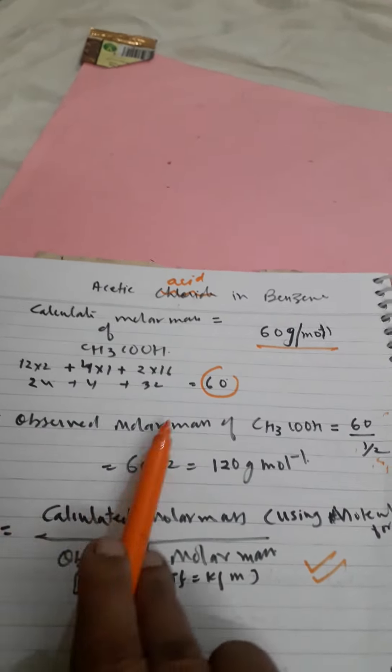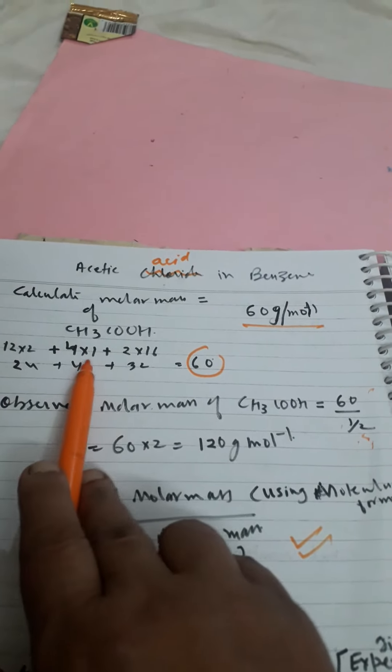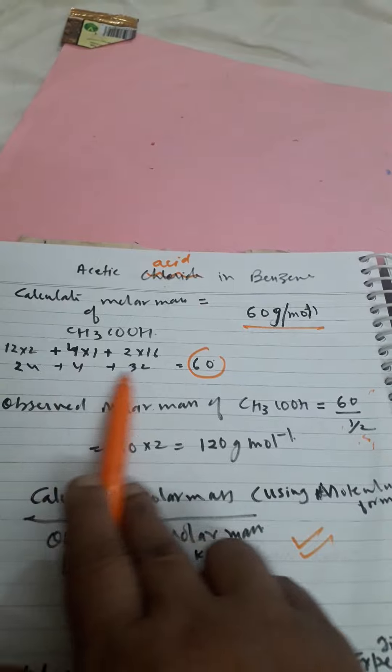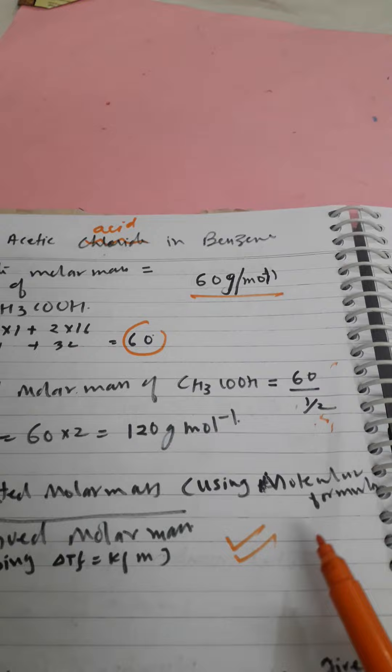So here by calculated observed mass, see here, 12 into 2 plus 4 into 1, like this 2 into 16, you will get 60. And 60 by half is equal to 120.